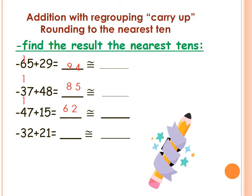And the next one is 32 plus 21. Here is 2 plus 1: ones plus ones — 2 plus 1 equals 3. There is no carry up here. Then 3 plus 2 equals 5. Excellent, Primary 2.